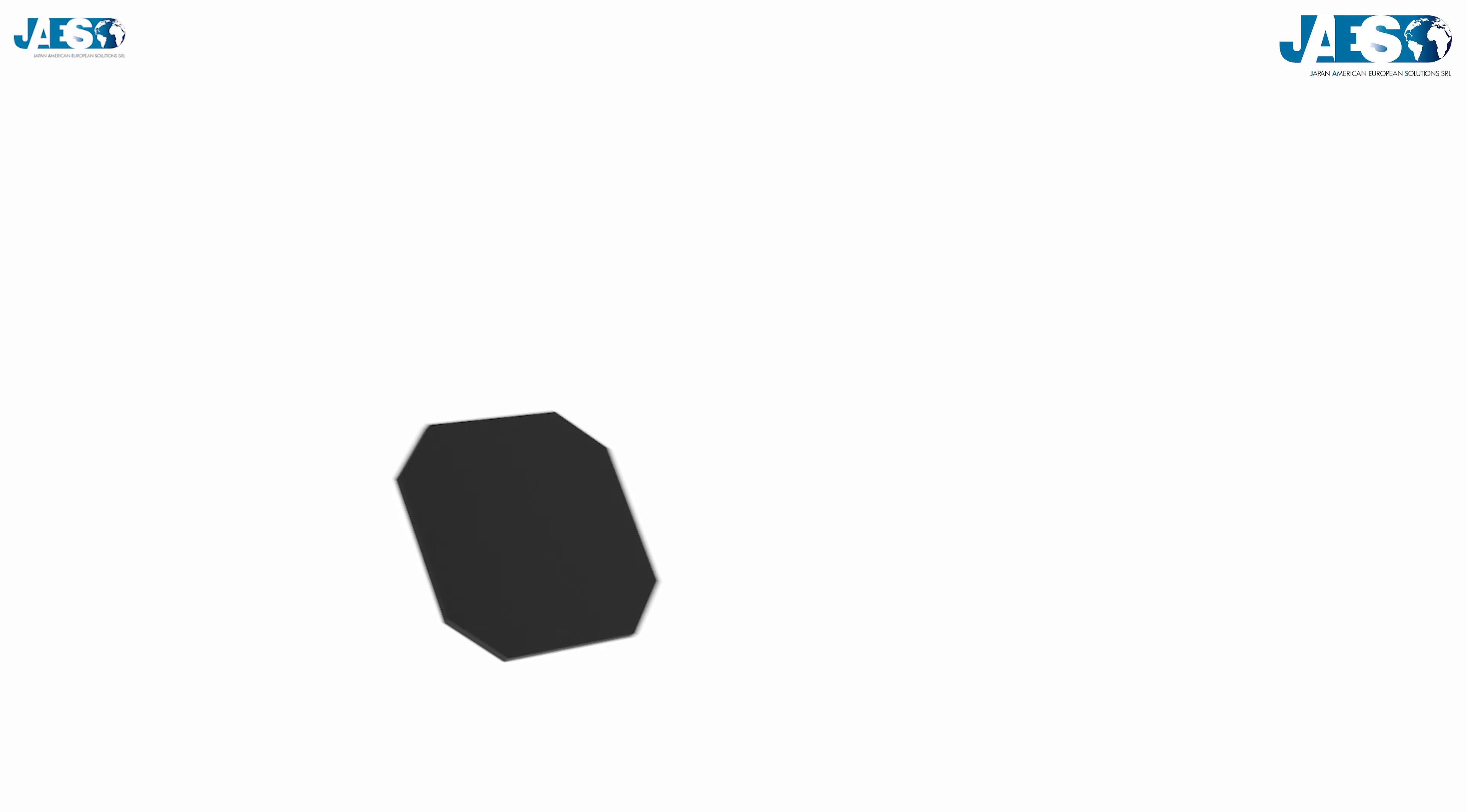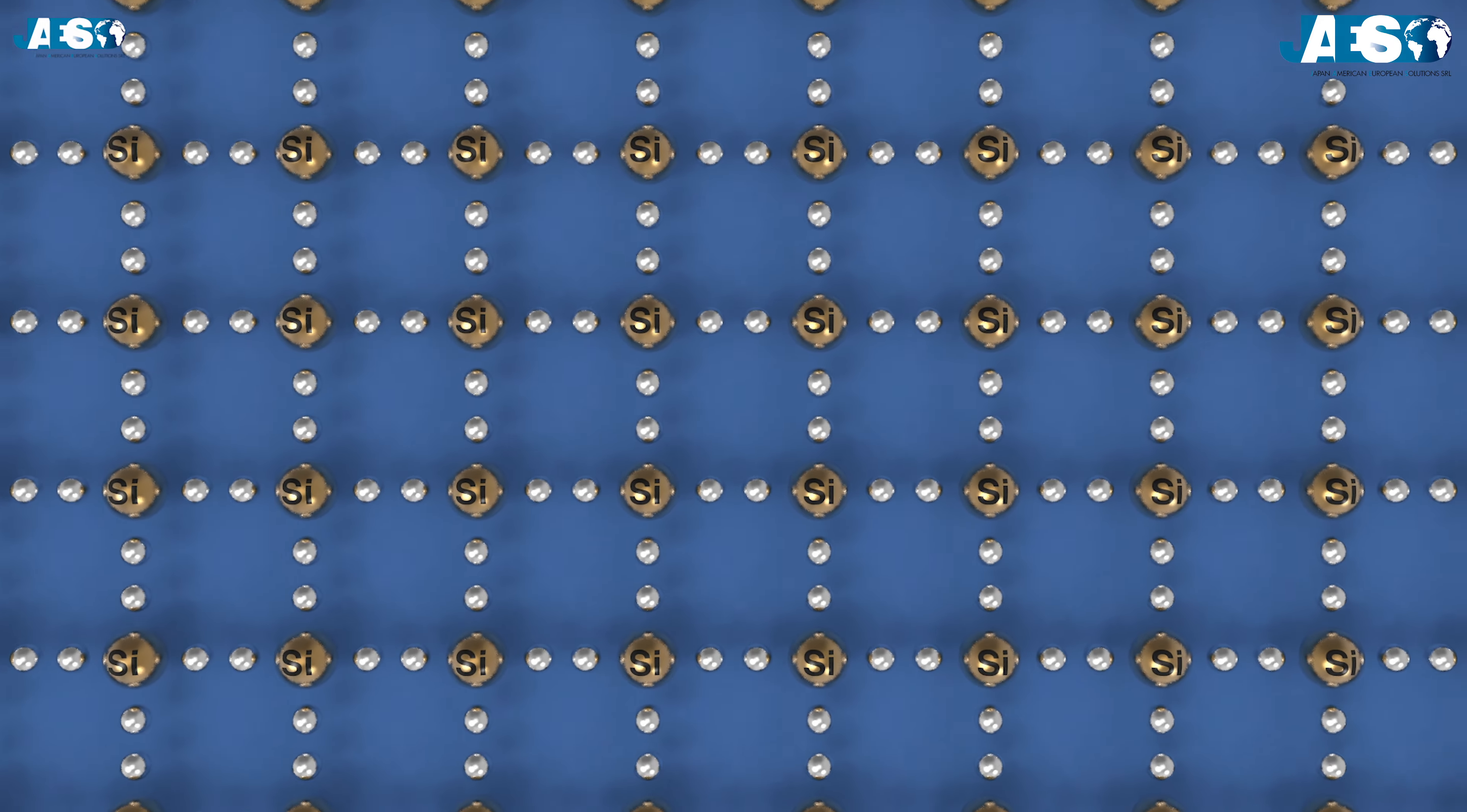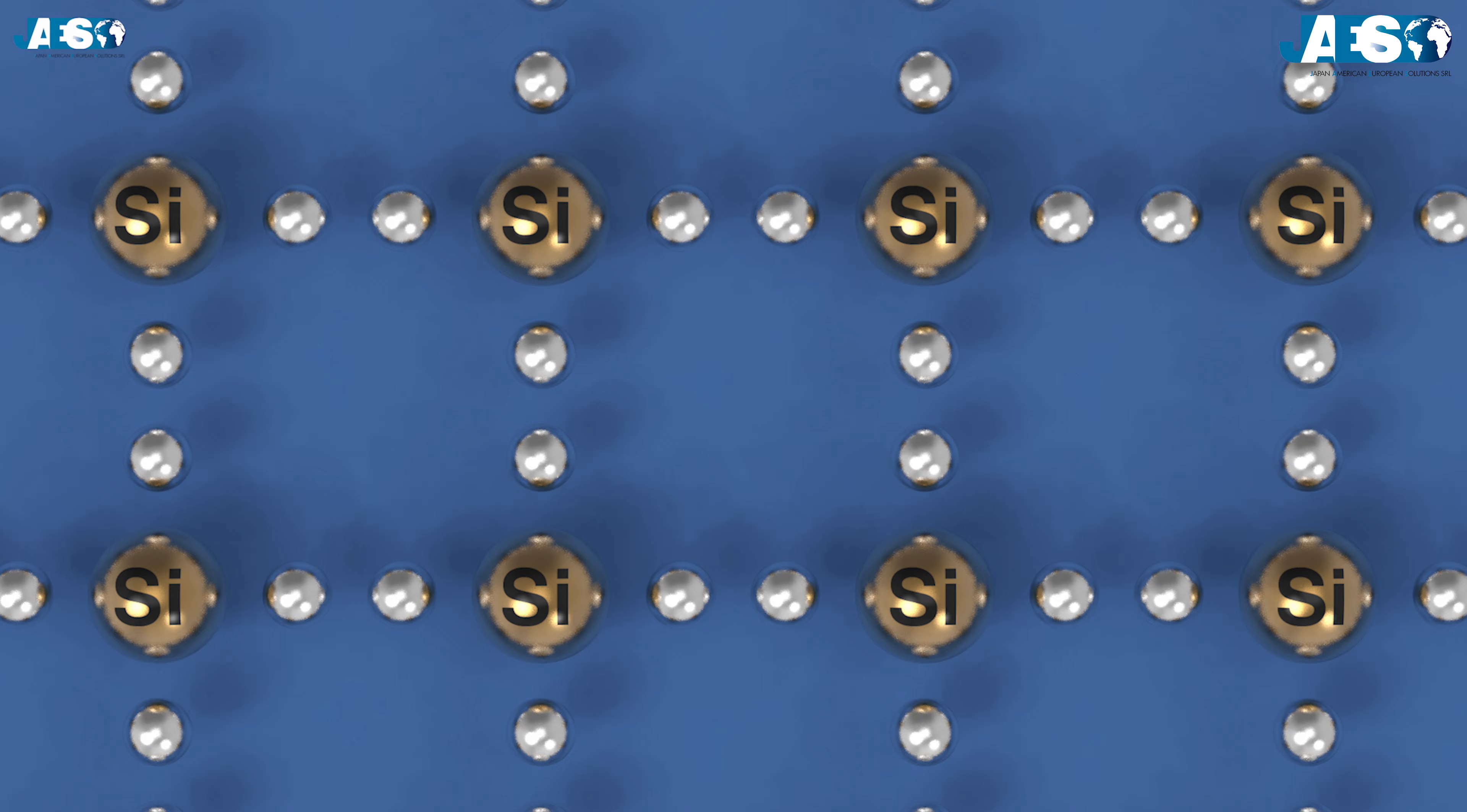If we look closer at the structure of silicon, we can see that the valence electrons, which are those of the outermost layer of the atom, are linked with other silicon atoms, creating a very regular crystal lattice.